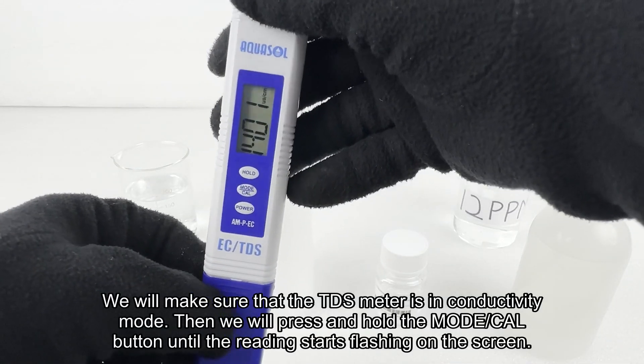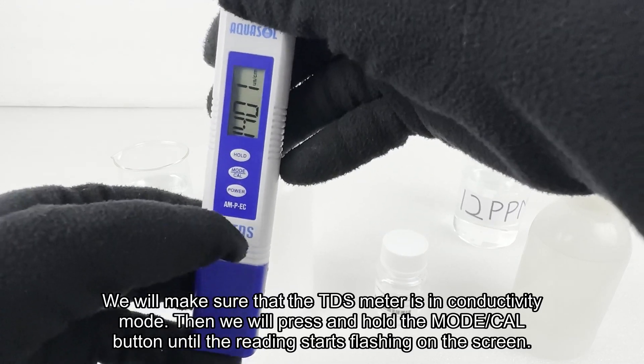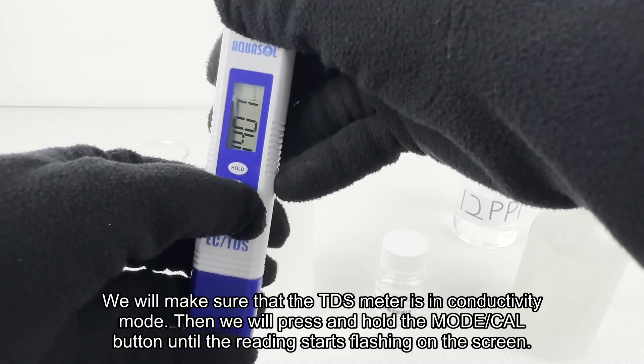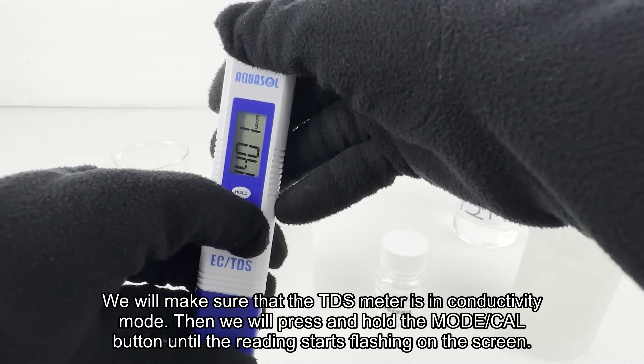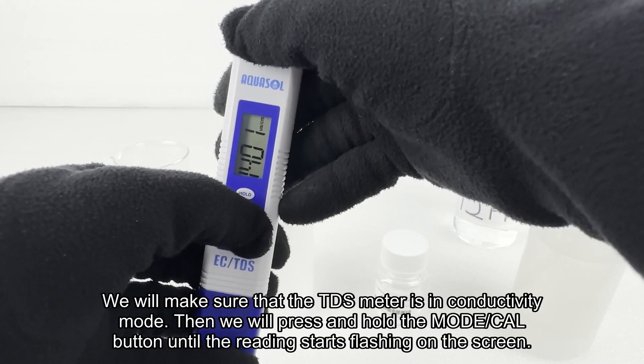We will make sure that the TDS meter is in conductivity mode, then we will press and hold the mode CAL button until the reading starts flashing on the screen.